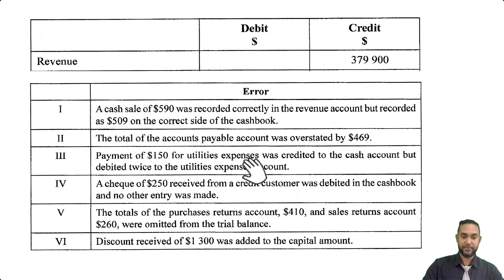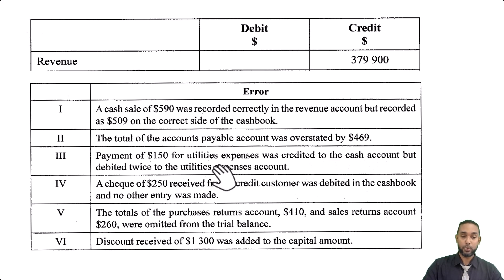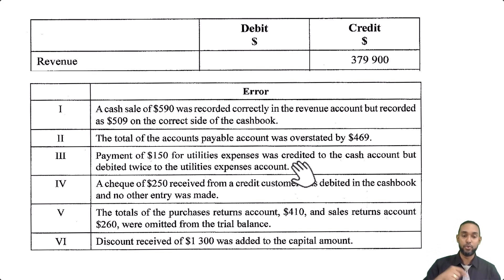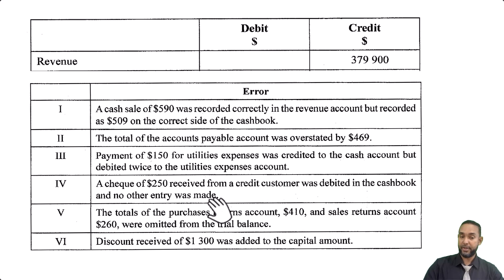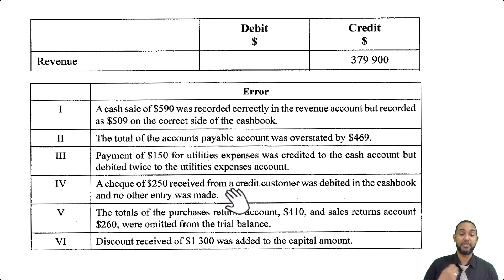Error three: we paid $150 for utilities. It was credited to cash but debited twice to utilities. You're not supposed to debit twice, so we have to undo one of the debits — effectively subtracting $150 from utilities, because expenses have debit balances. Error four: a check of $250 received from a credit customer was debited in the cashbook, which is correct, but no other entry was made at all. If you debit the cashbook, you have to credit where it's coming from — you have to credit receivables to reduce it.